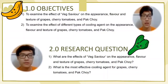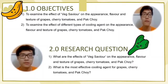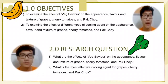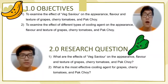The objectives of this experiment are to examine the effect of wedge saviour on the colour, appearance, flavour and texture of grapes, tomatoes and bok choy, and to examine the effect of different types of cooling agents on the colour, appearance, flavour and texture of the grapes, tomatoes and bok choy.